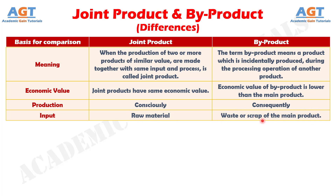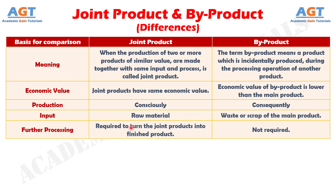Difference No. 5: In the case of joint products, subsequent processing is often required to enhance the quality or turn them into finished products, in which additional money is expended. As against this, most of the time by-products are sold in their original form, but can be further processed if it can generate high value.